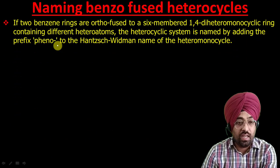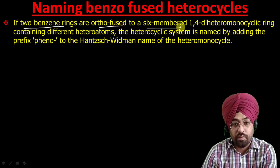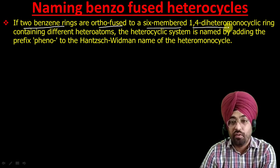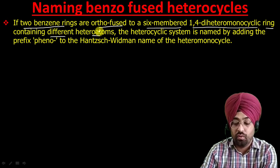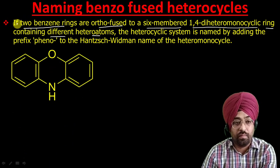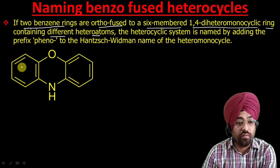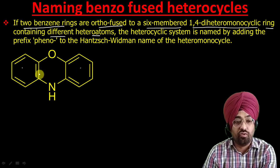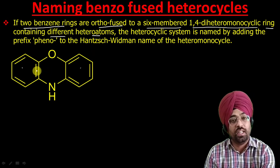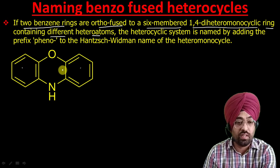The first special case is: if two benzene rings are ortho-fused to a six-membered 1,4-dihetero monocyclic ring containing different hetero atoms. Let me explain: 'ortho-fused' refers to a system in which two rings are fused sharing a single bond — that is, they share two atoms. So the first benzene ring and the second benzene ring are both ortho-fused to the central heterocyclic ring.